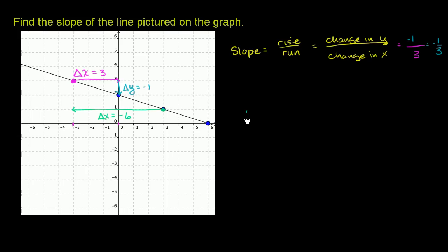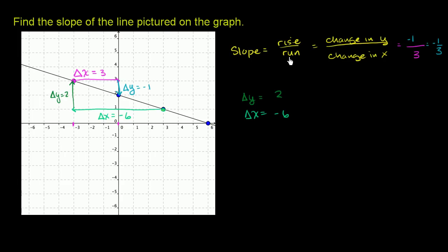Starting at this point, our change in x is negative 6. When we move 6 back, what is our change in y? Our y value went from 1 at this point, and when we go back to the other point, our y value is 3 — so we moved up by 2, meaning our change in y is equal to 2. Slope is change in y over change in x, or rise over run. So rise over run here is 2 over negative 6, which is the same thing as negative 1 third.